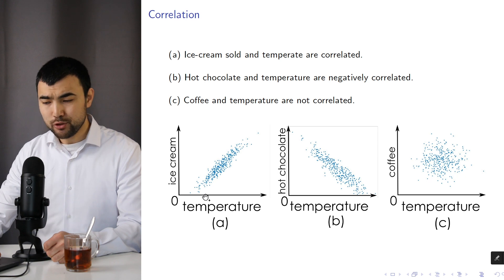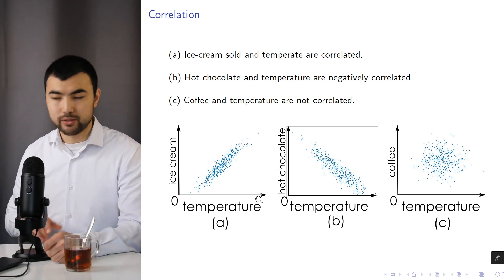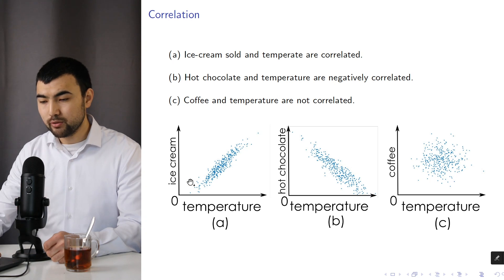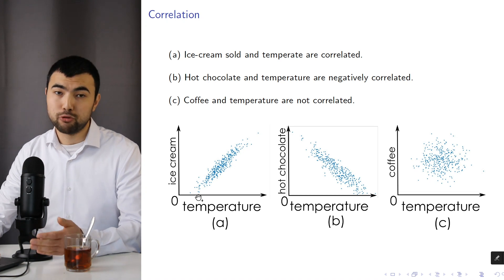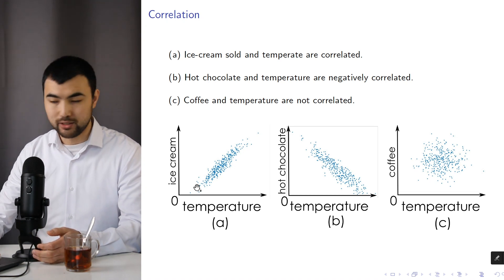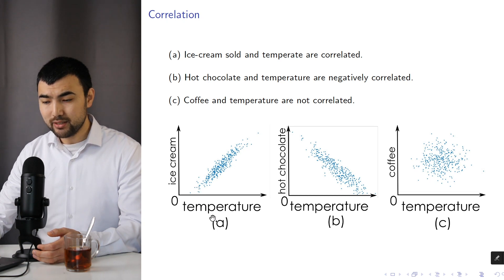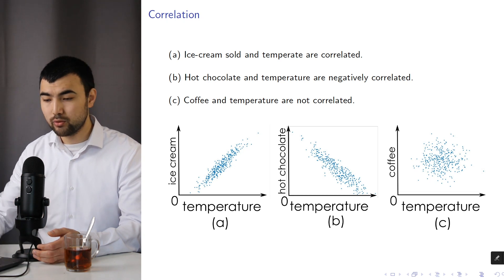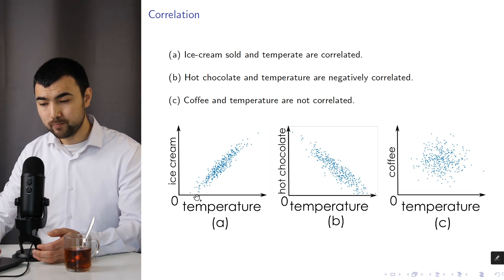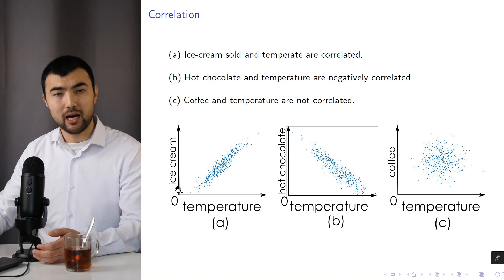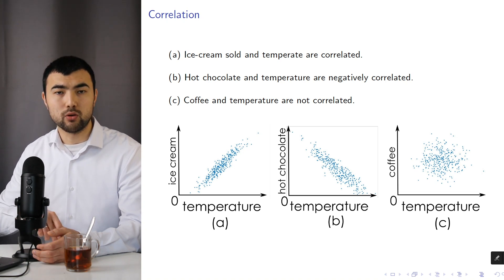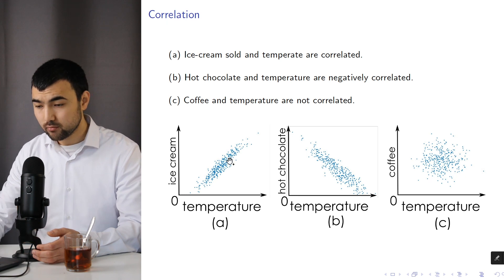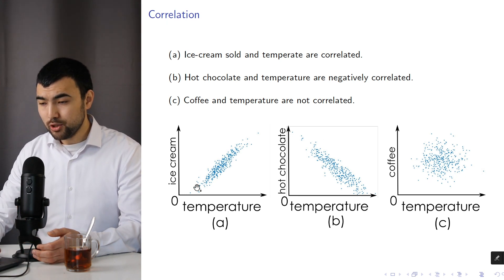As you can see, when temperature increases — for example, during the summer — people tend to buy more ice cream. However, when the temperature drops, for example during the winter, people tend to buy less ice cream. So even though these two quantities are random variables, they are correlated: an increase in one quantity means it is highly likely the second quantity will also increase.